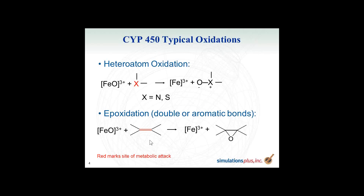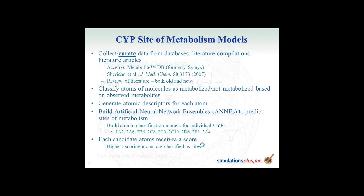Heteroatom oxidation occurs when you have a nitrogen or oxygen, and the CYP adds an oxygen to that particular atom to form the N-oxide or S-oxide. Another example is epoxidation, which occurs at double bonds or aromatic rings and forms an epoxide. Currently in AdMet Predictor 7.1, we do not treat this particular reaction.